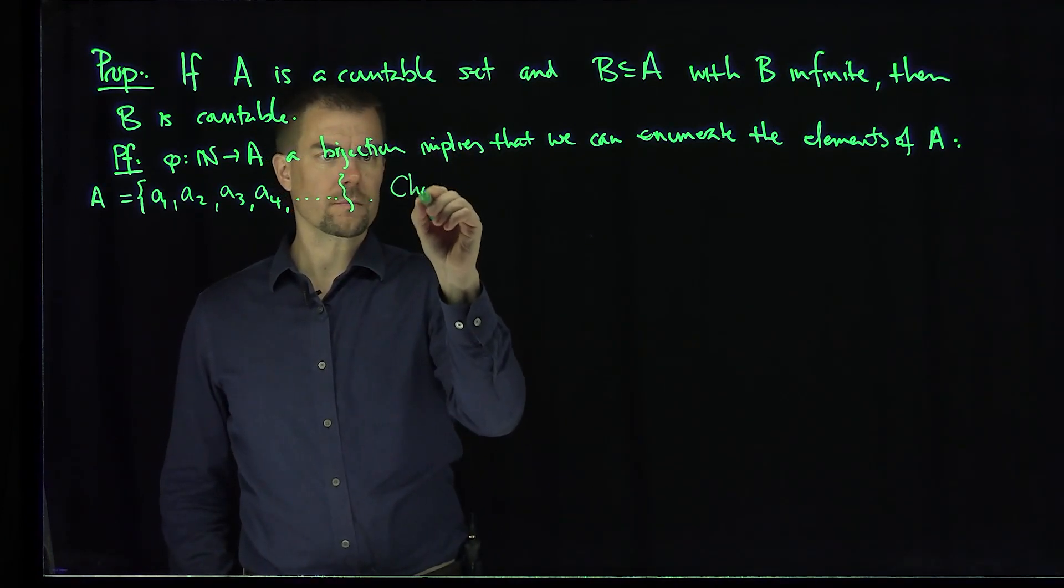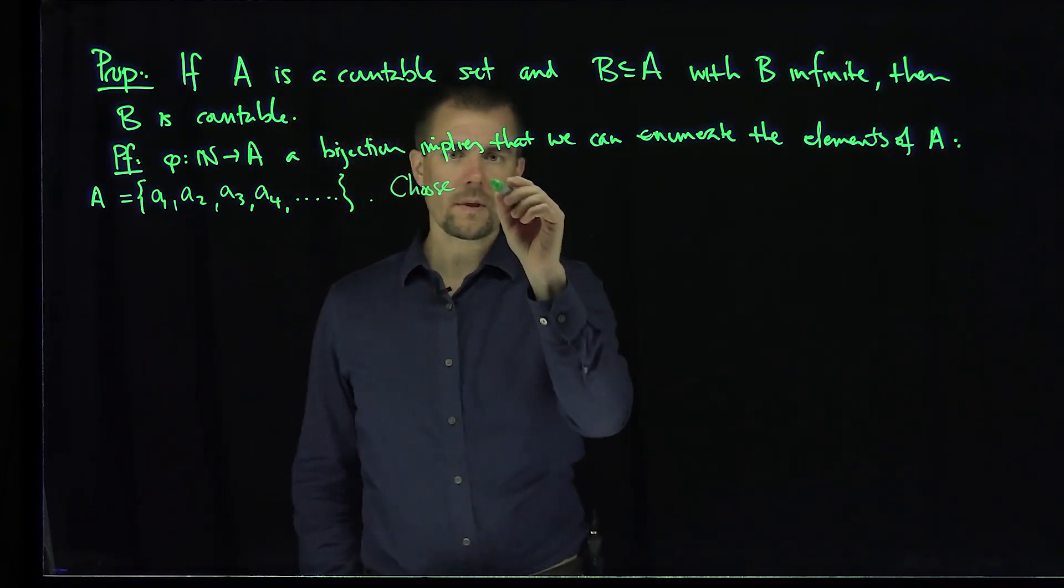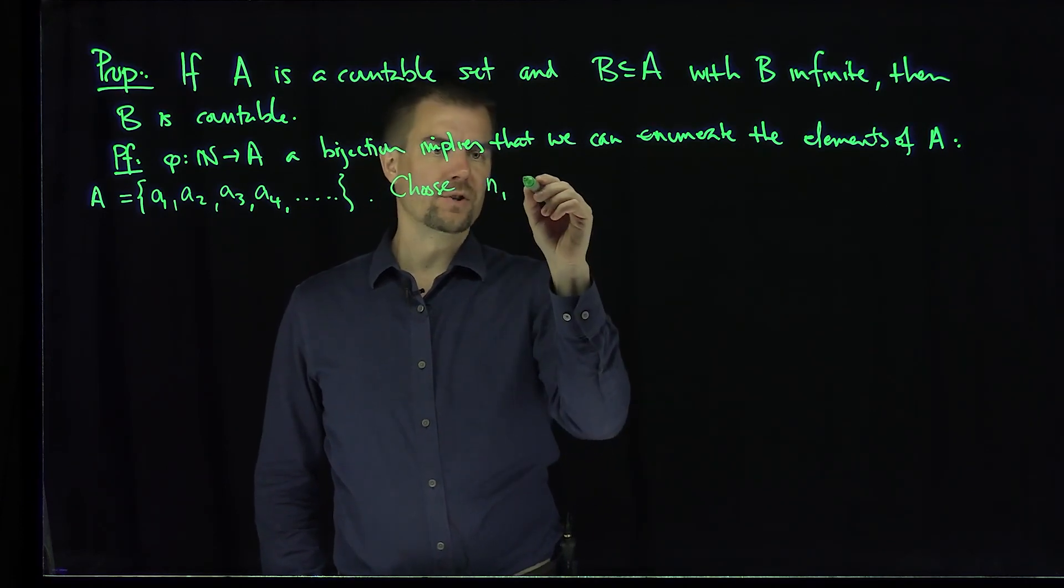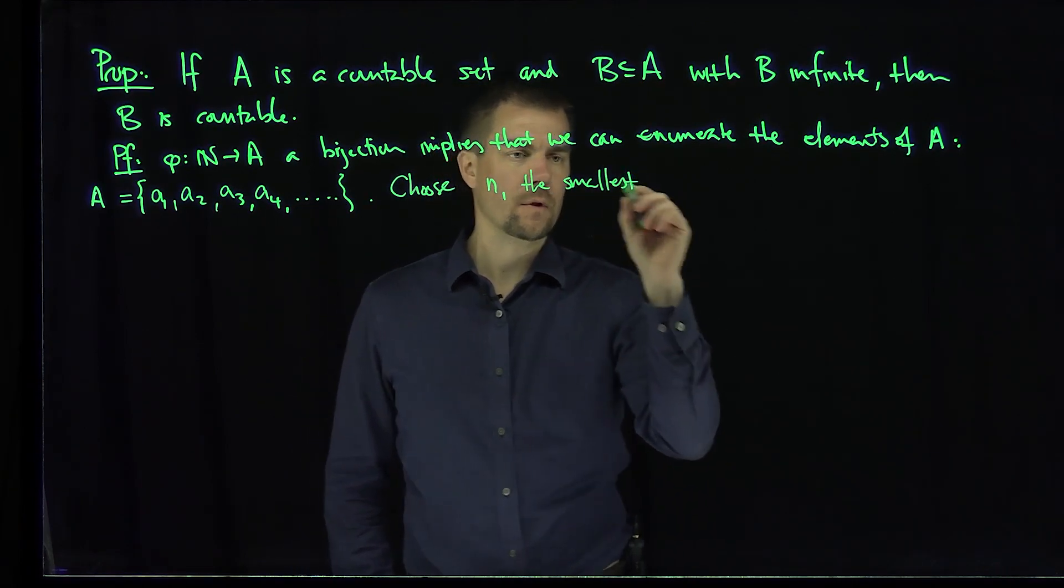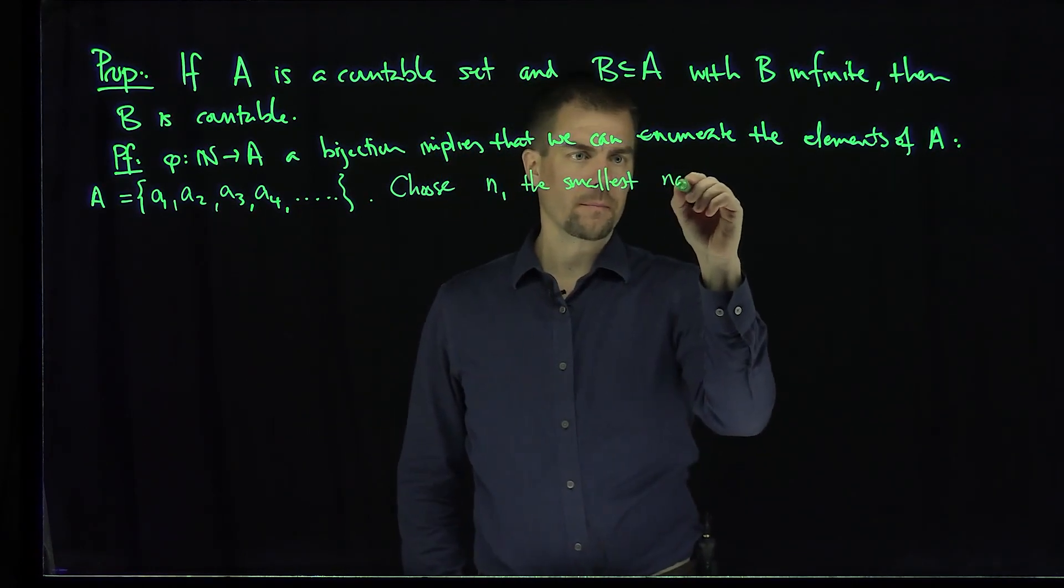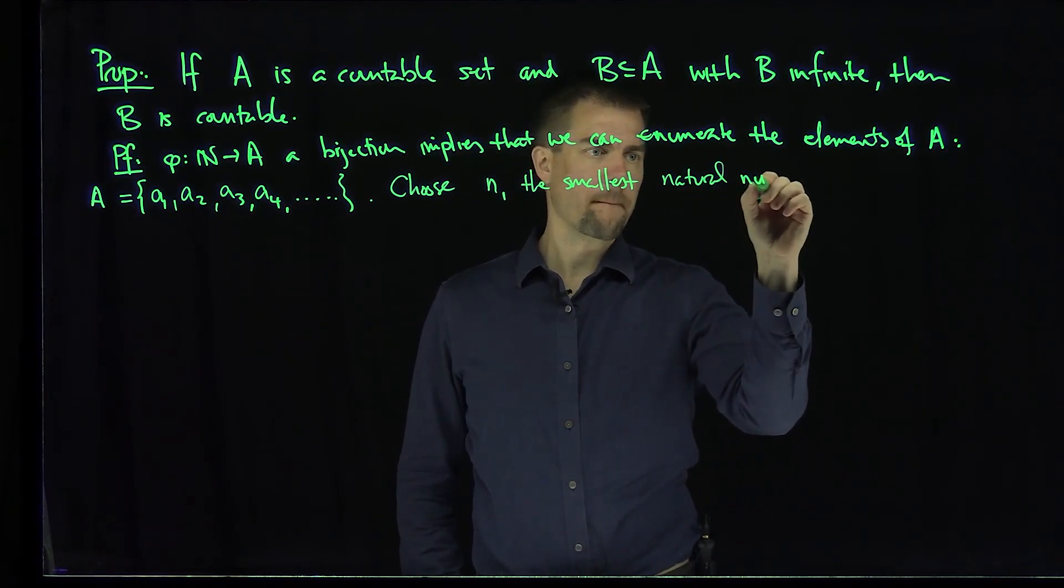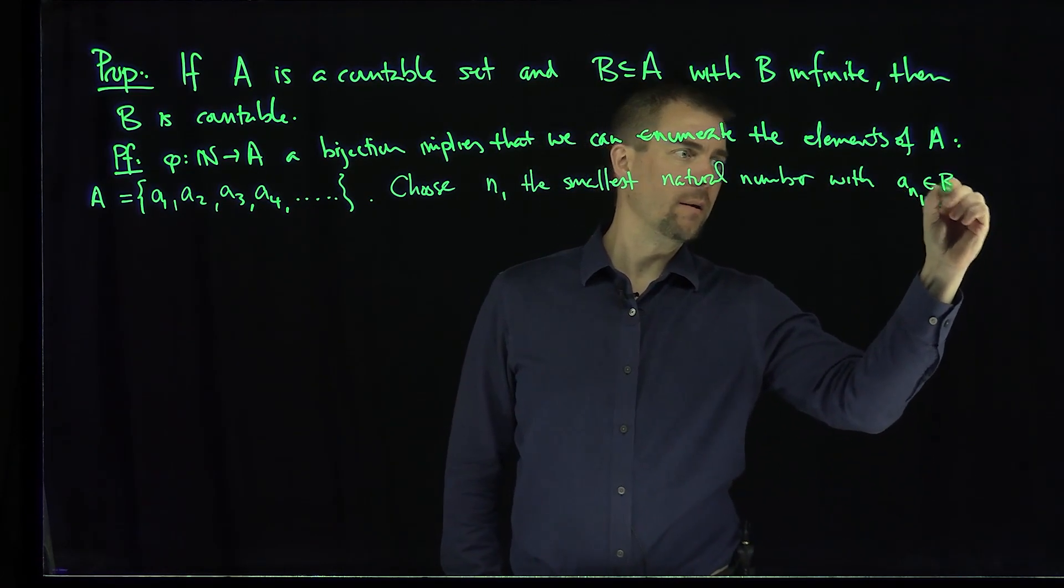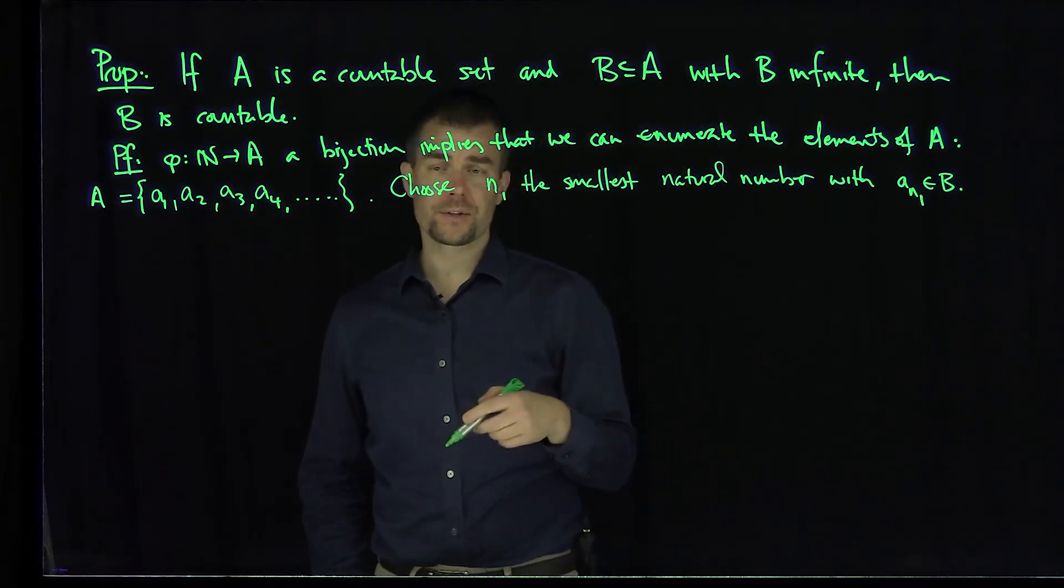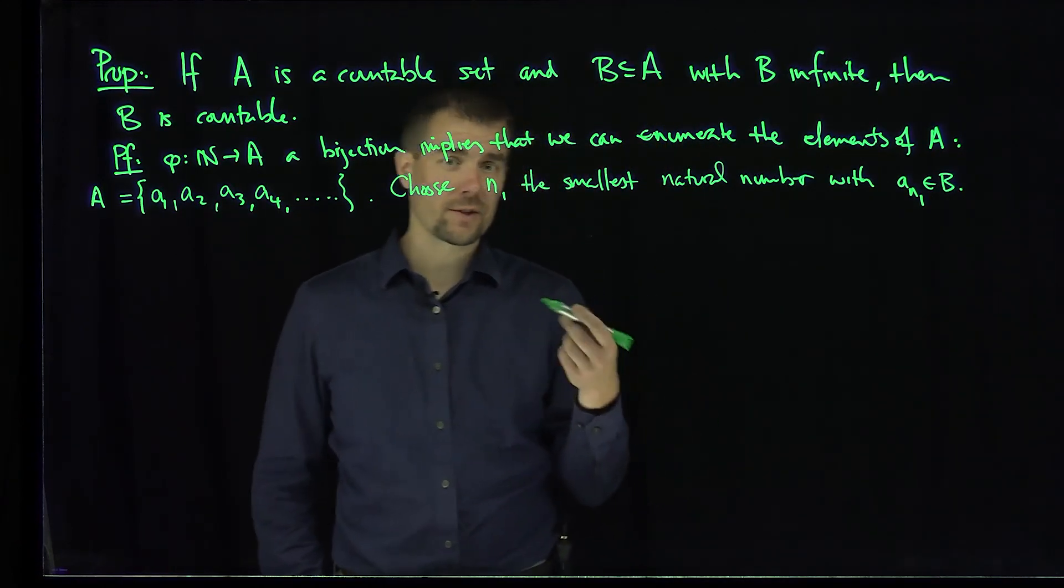And then what we do is the following: we choose N1 to be the smallest natural number with A_N1 in B. There's certainly such a smallest. Then we'll choose N2 to be the next smallest.